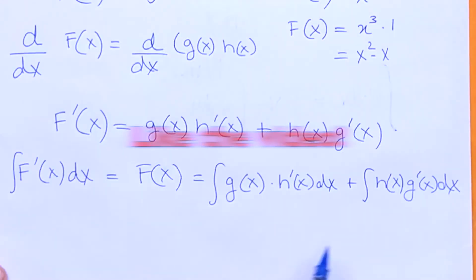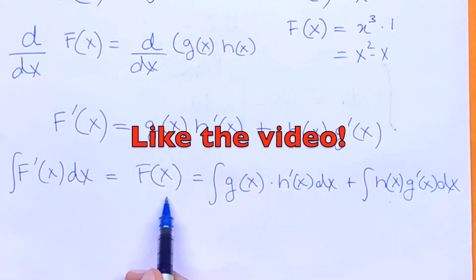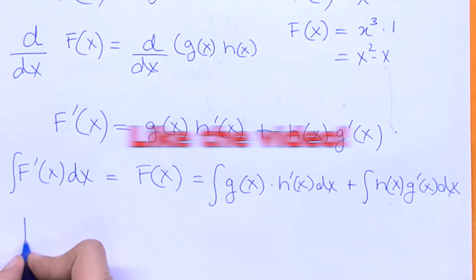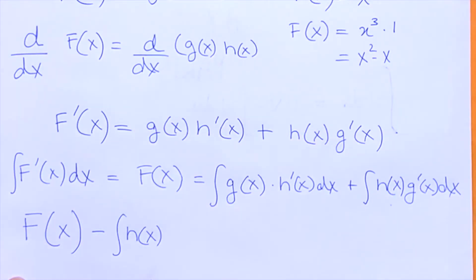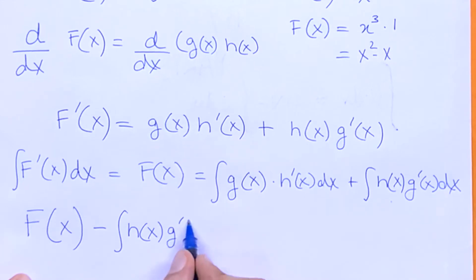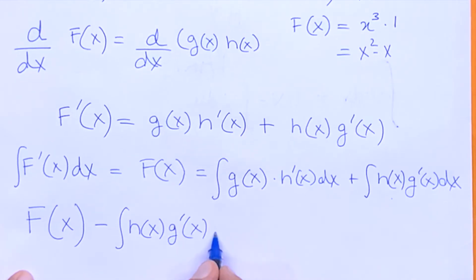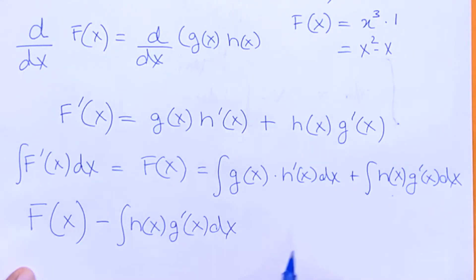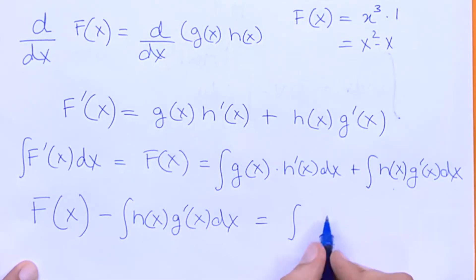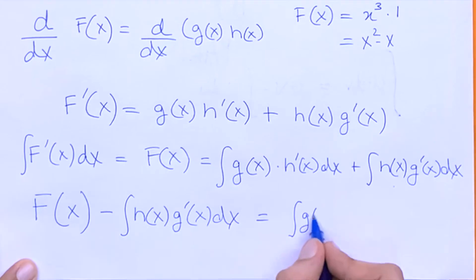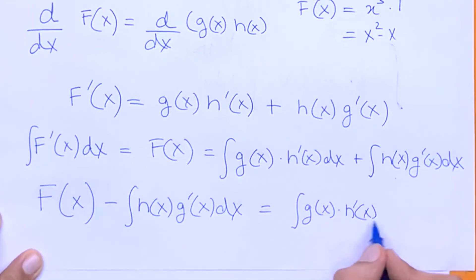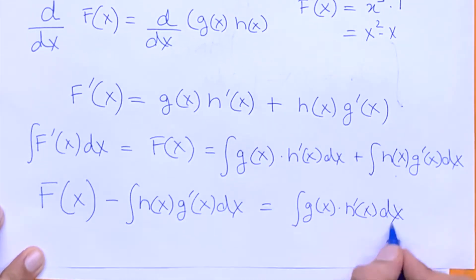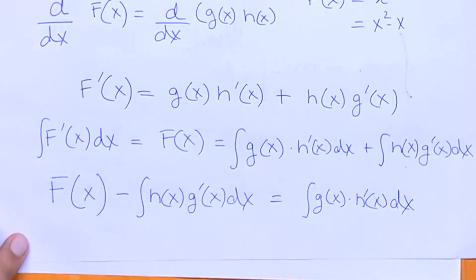So from here, we can take this integral to this side and subtract it. So we have f of x minus the integral of h of x times g prime of x dx, and this is actually our formula.